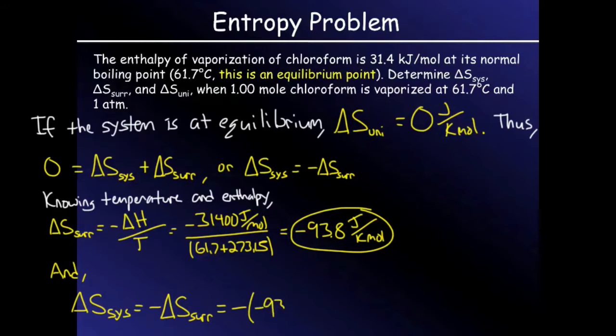But, remembering we're at equilibrium, then delta S system will be equal to negative delta S surroundings, and the two negatives will make a positive 93.8 joules per kelvin mole.